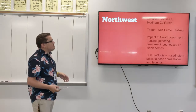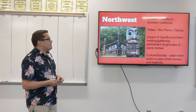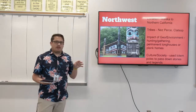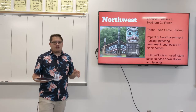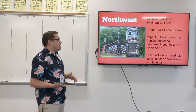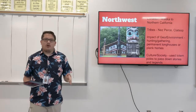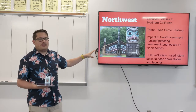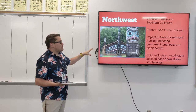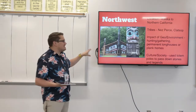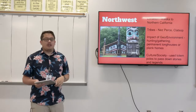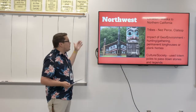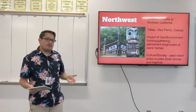Looking at the Northwest — Alaska to Northern California — the Nez Perce and the Klatsop are some examples of tribes. Hunting and gathering is going to be the way they acquire food, not quite the established farming you'll see in other areas. They have permanent long houses or plank homes. One unique feature of this area's iconography are totem poles, which are used to pass down stories and legends. You'll also see them gravitate towards animals and symbology of animals that are around them.